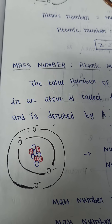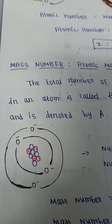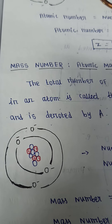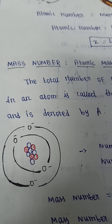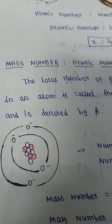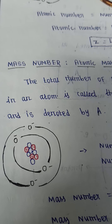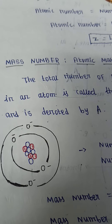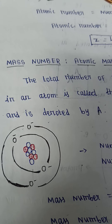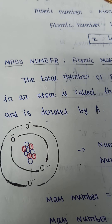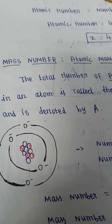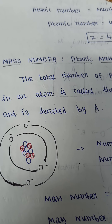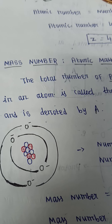So why are we not considering the number of electrons in the mass number? Because the mass of electrons is much less compared to the total number of protons and neutrons.